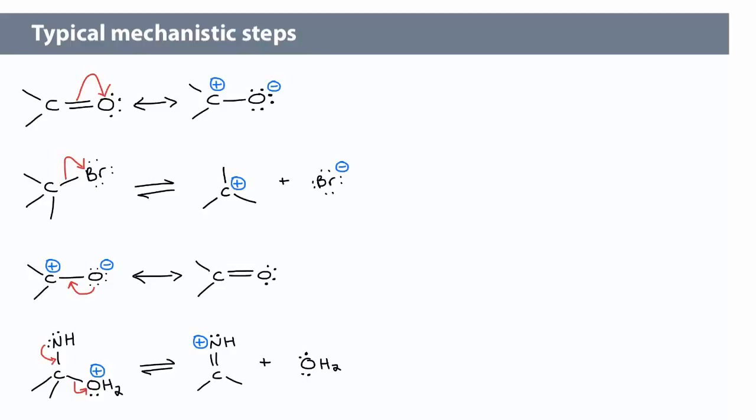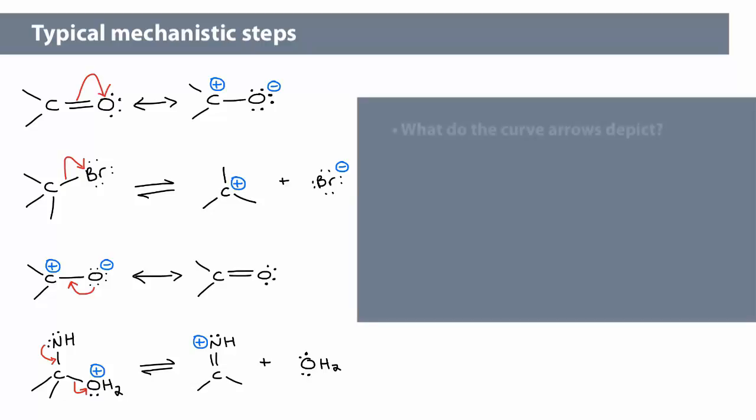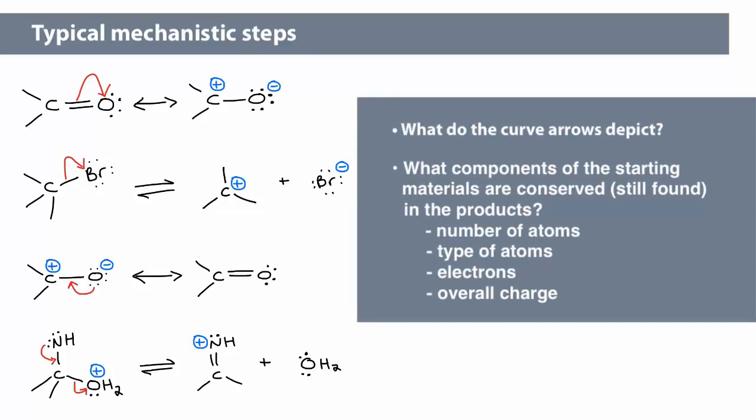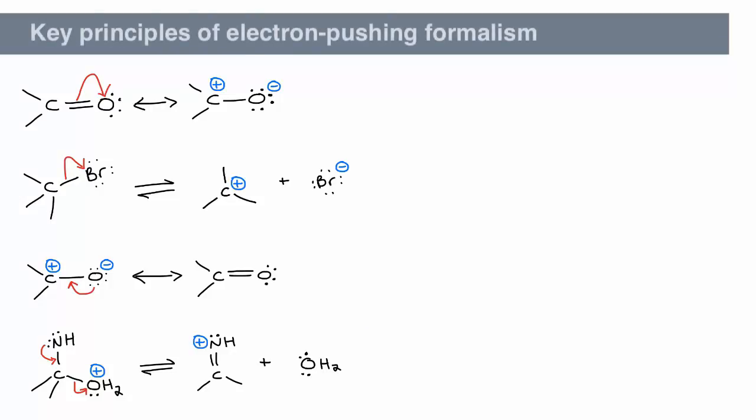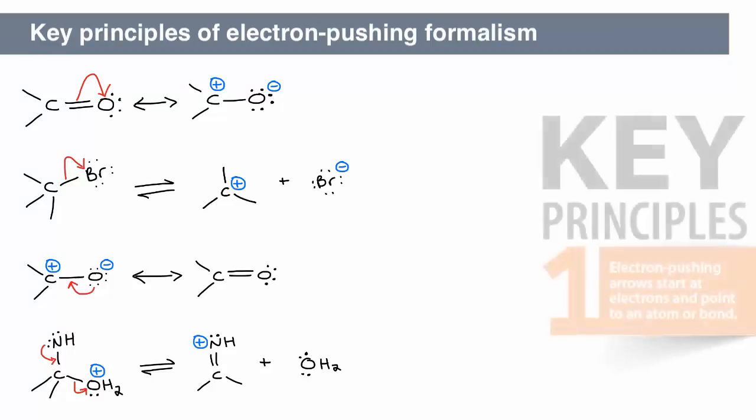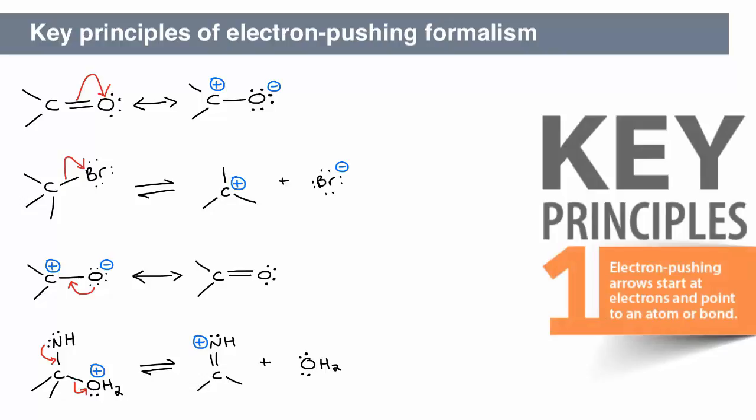Here is a set of reactions that represent common mechanistic steps. What do the curved arrows depict? What components of the starting material are conserved, or still found, in the product? The curved arrows depict electron movement. That's why they're also called electron-pushing arrows. They always start from electrons and point to an atom or bond. This is a key principle that we will revisit frequently.